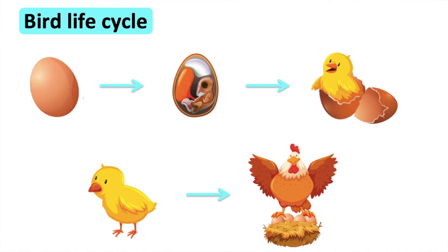For example, a chicken. So first the chicken lays an egg. The chick inside the egg begins to grow. Once it has fully developed, it cracks the egg open and gets out of it.